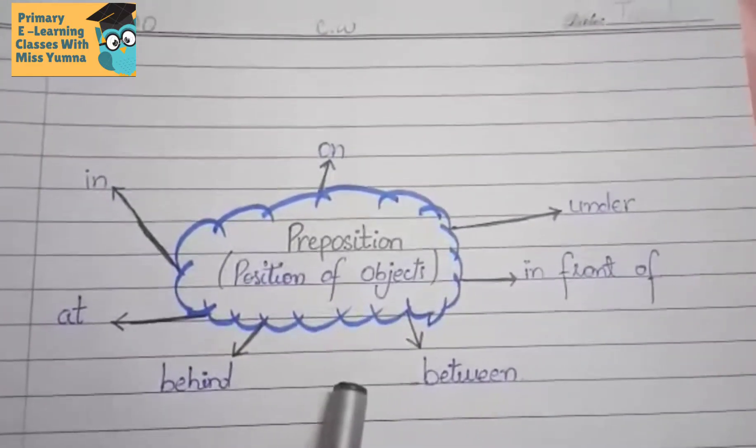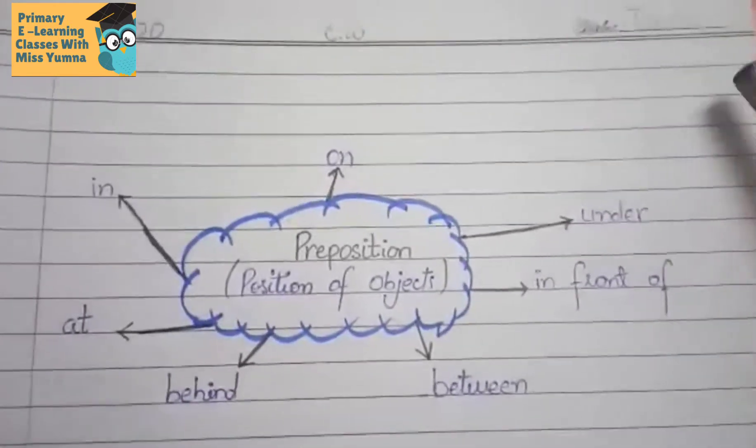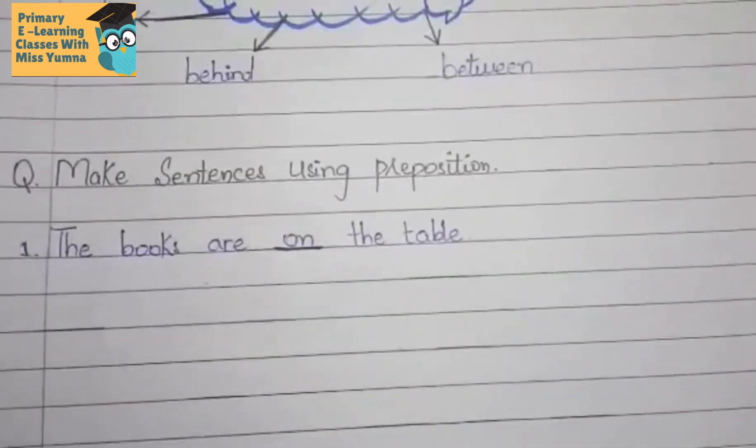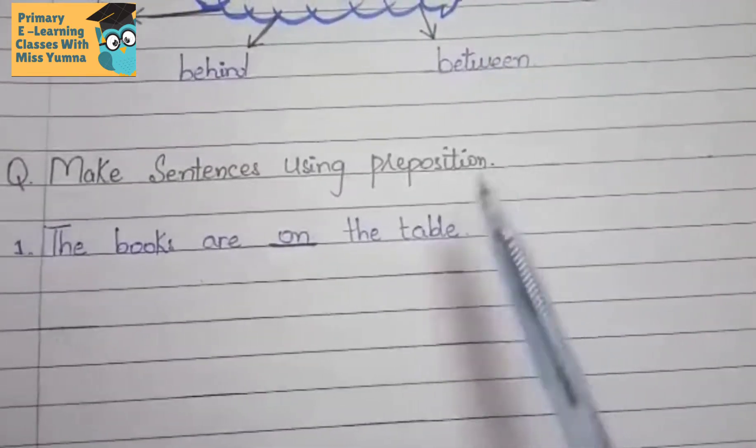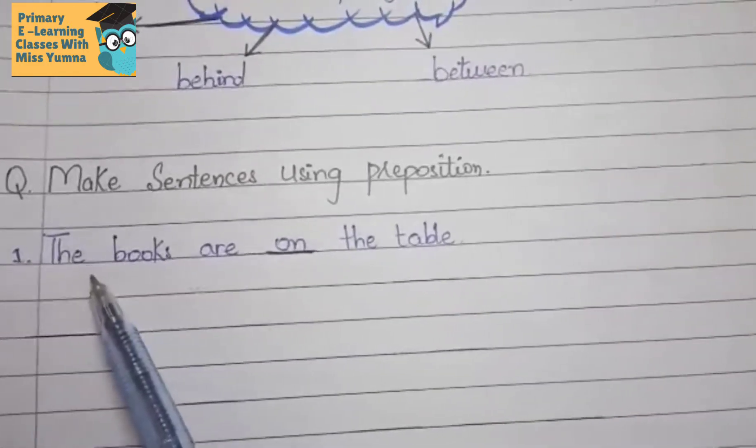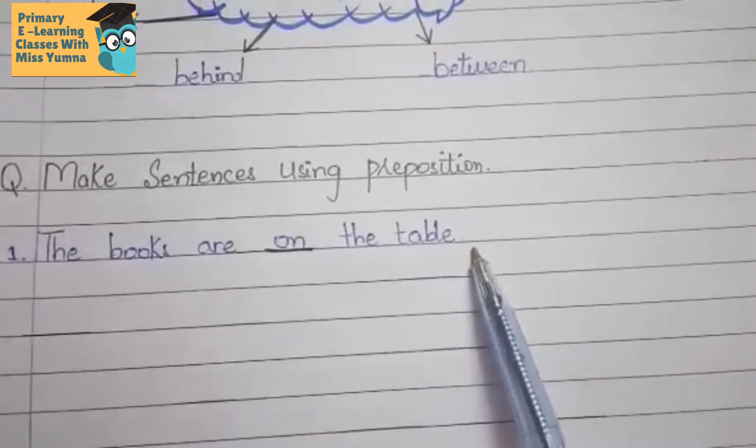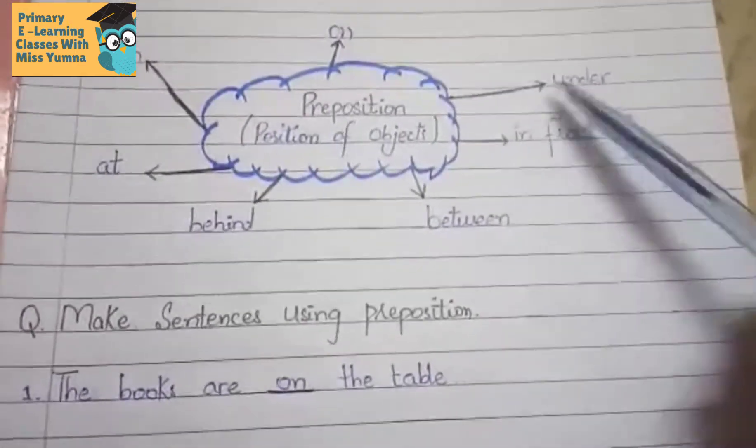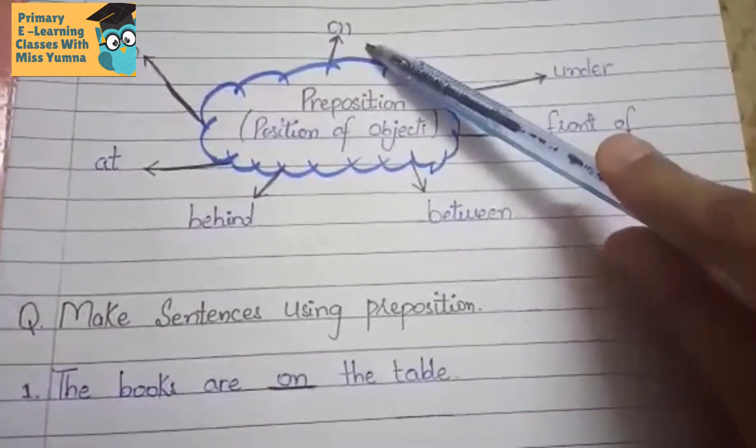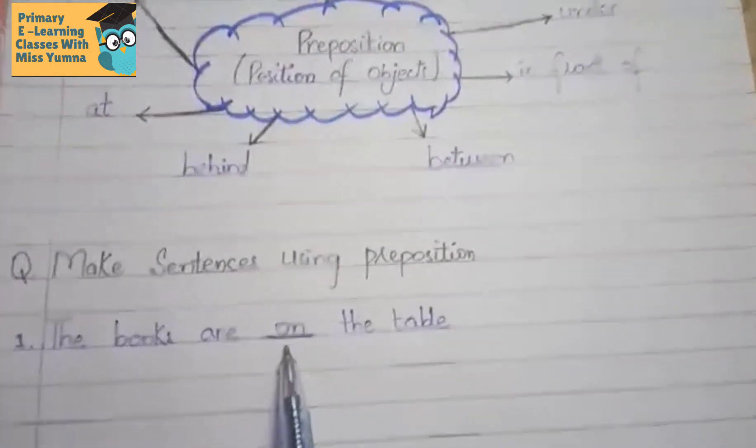Make sentences using preposition. First is the books are on the table. Here we know which preposition is used. We know on is used, so you can underline this preposition.